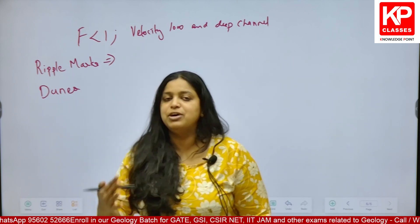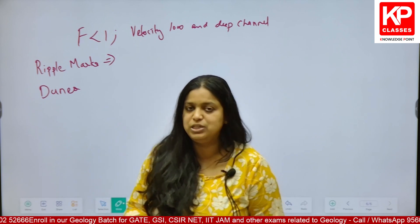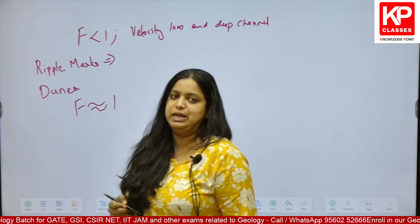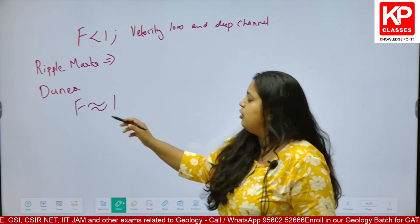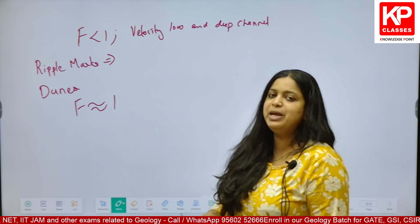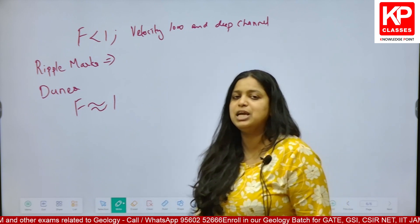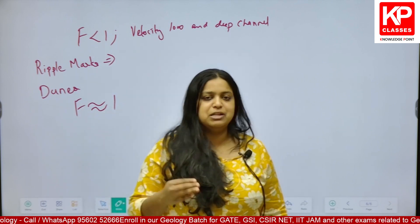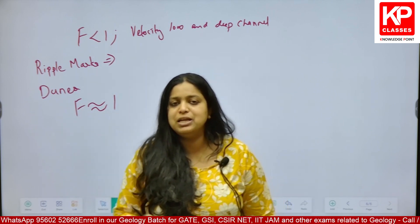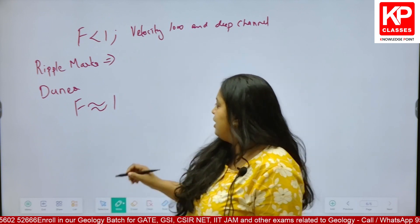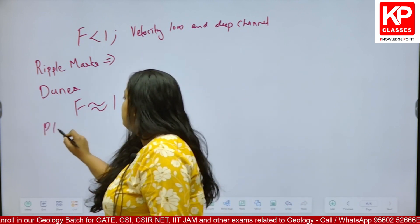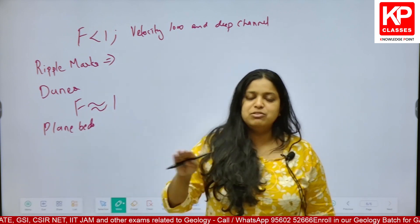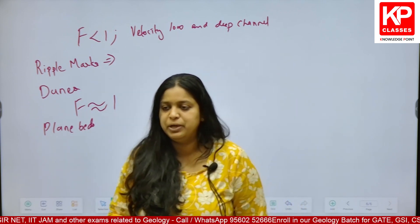If I increase the velocity further, F will be approximately equal to 1 — the flow condition will be critical flow. At critical flow condition, all the dunes or ripple marks whichever developed in the flow system will be completely removed and causes formation of normal plane beds. Normal plane beds or plane laminations will be developed.